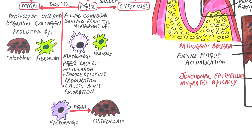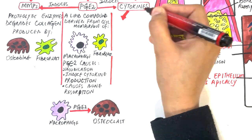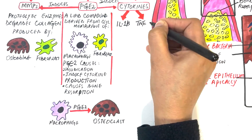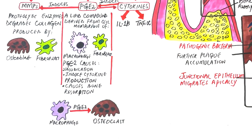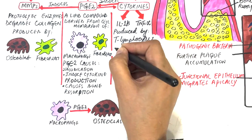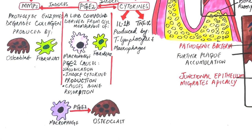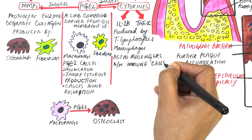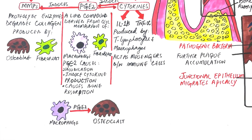The synthesis of PGE2 is upregulated by interleukin-1-beta and TNF-alpha. Interleukin-1-beta and TNF-alpha are the most important cytokines produced mainly by T lymphocytes and macrophages. They are the key inflammatory mediators in periodontal disease, acting as messengers to transmit signals from one cell to another and aiding in further recruitment of immune cells in the area of insult.